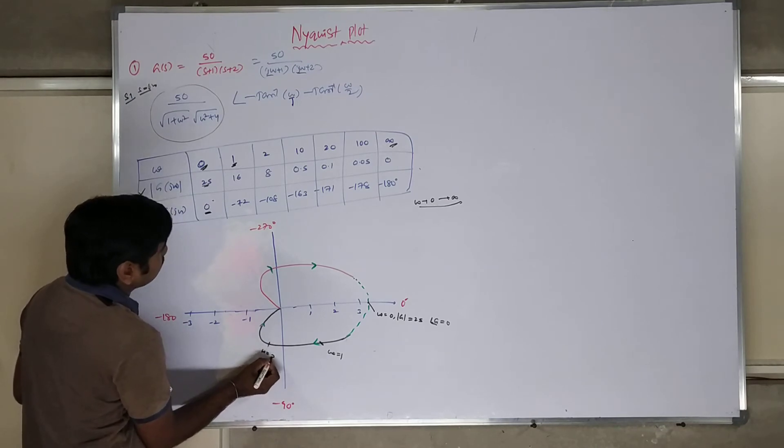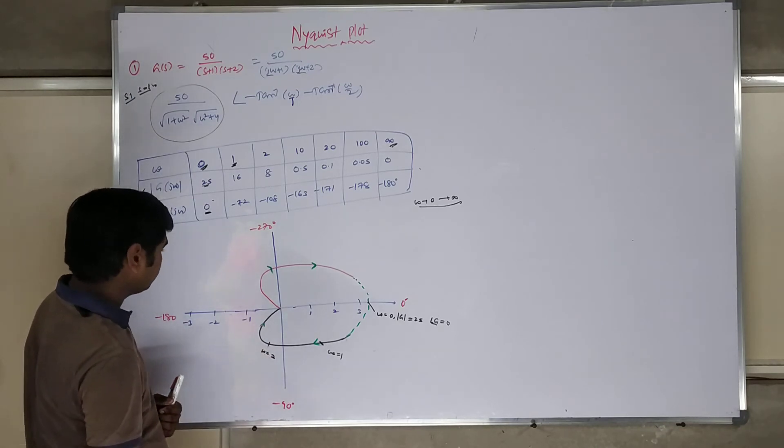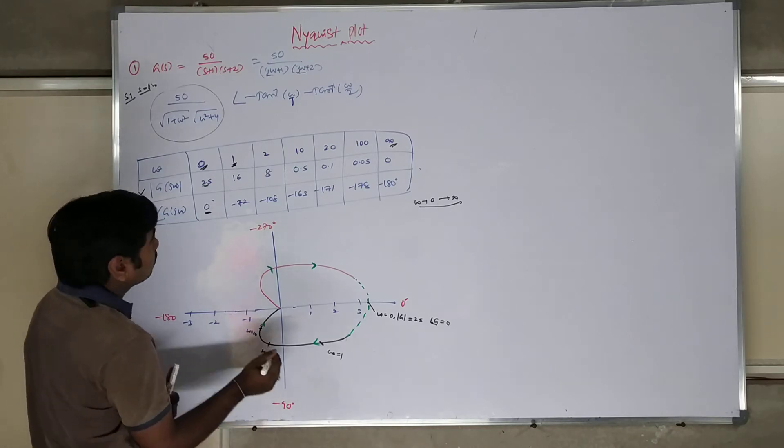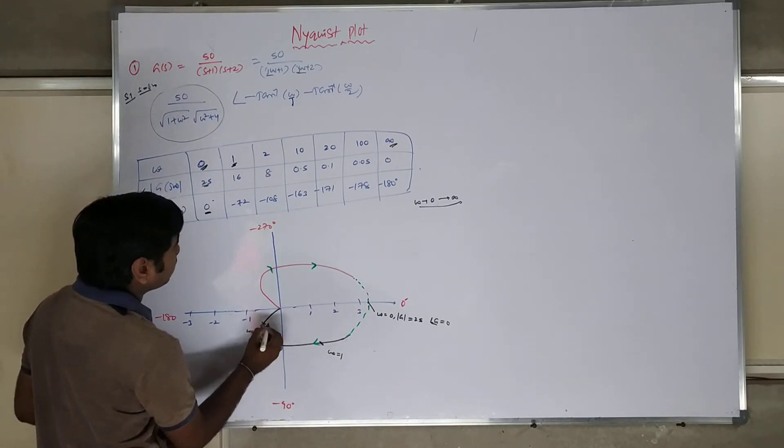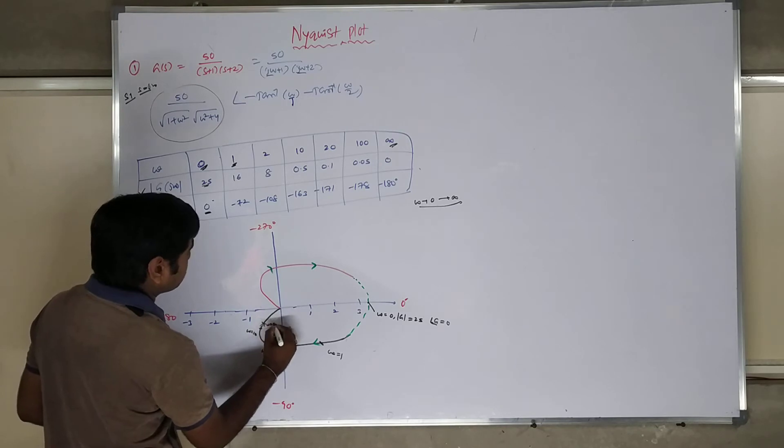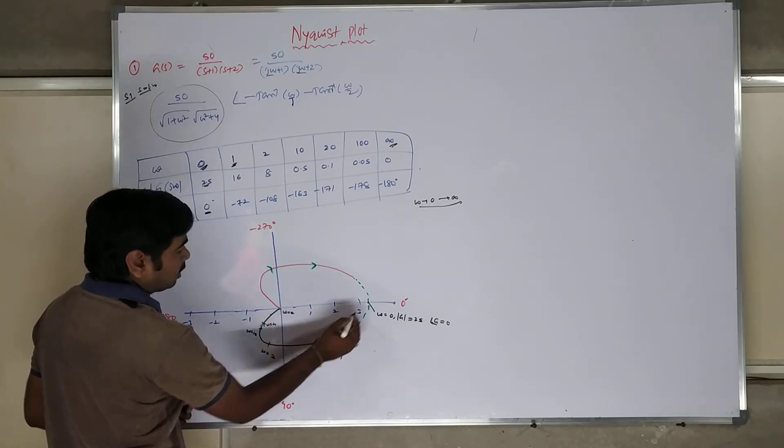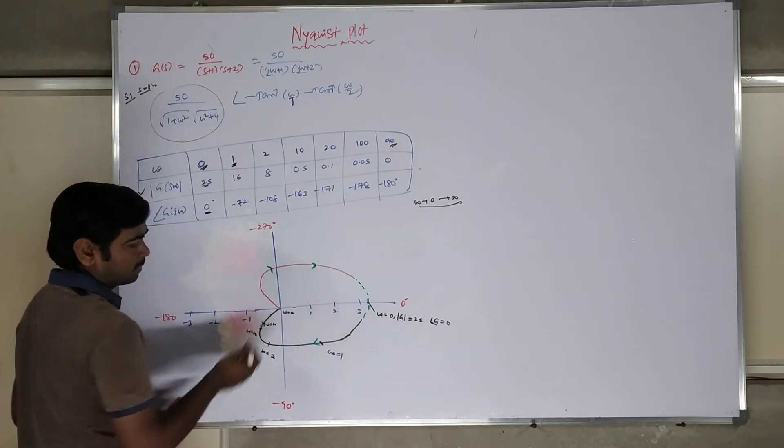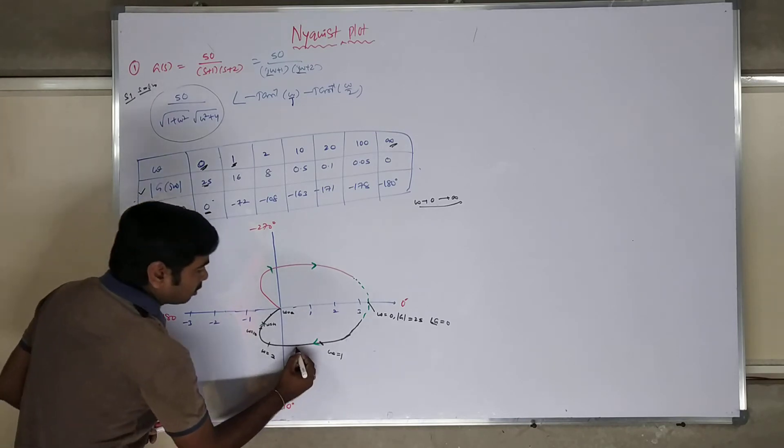Then after, you are having omega is equal to 10. Then 171. Here, omega is equal to 20. Here, omega is equal to 100. Like this, I should mark points. I should draw this plot. This is called as polar plot.